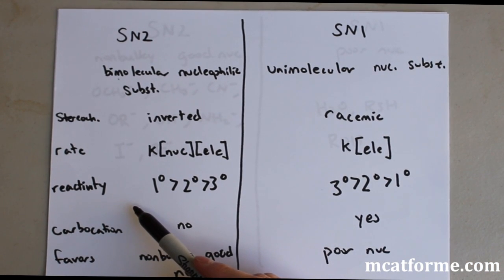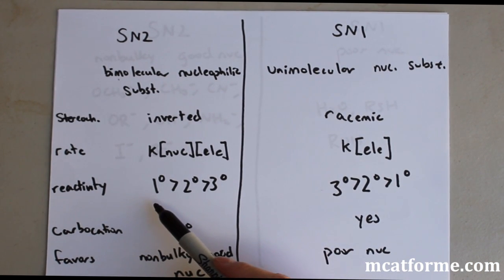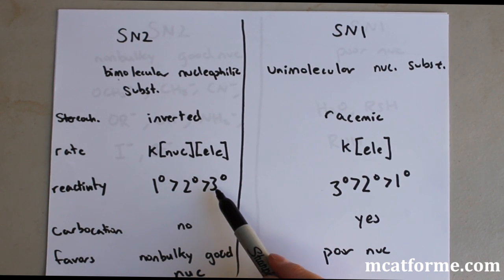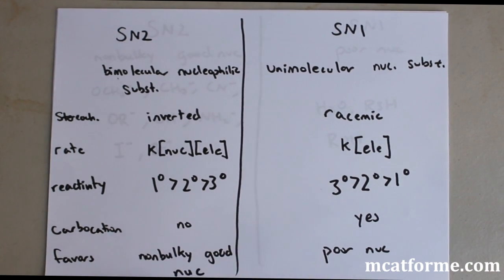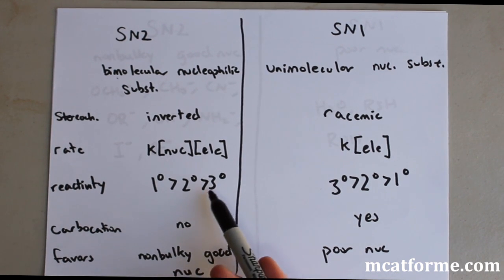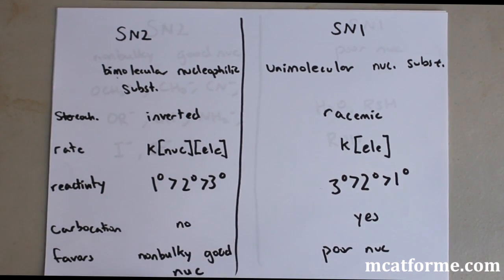For SN2, in terms of reactivity, we have primary being the most reactive, and tertiary being the least. And that's just due to steric hindrance. It's going to be harder to do a backside attack when you have all these molecules blocking you. That's why tertiary is the least reactive. And the other way is different.